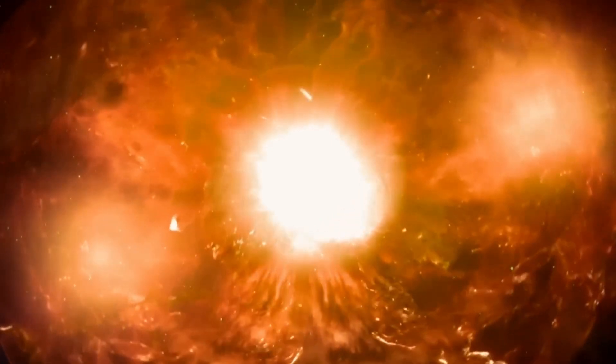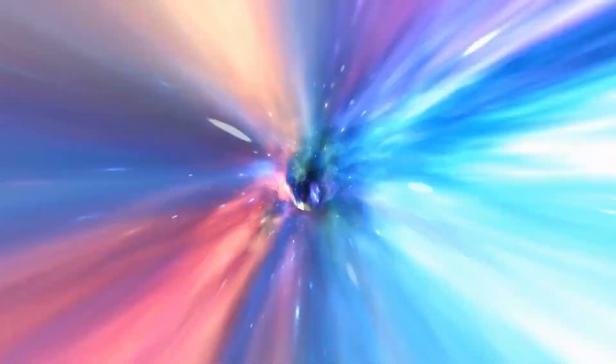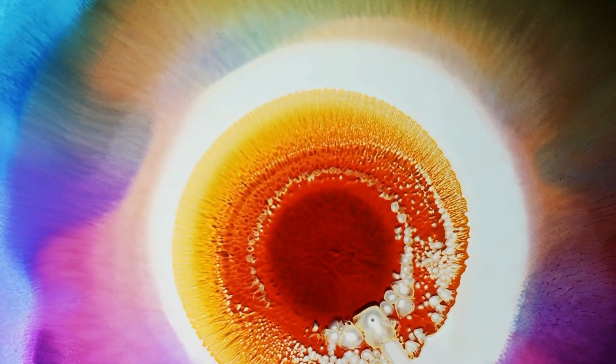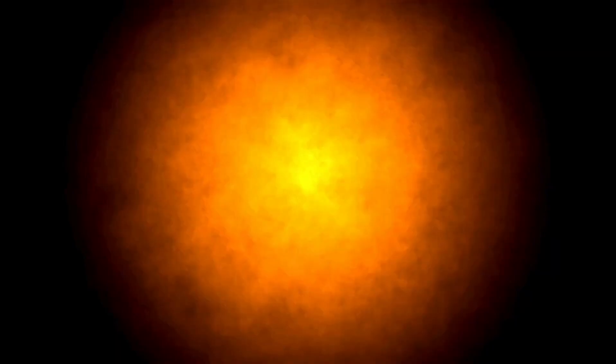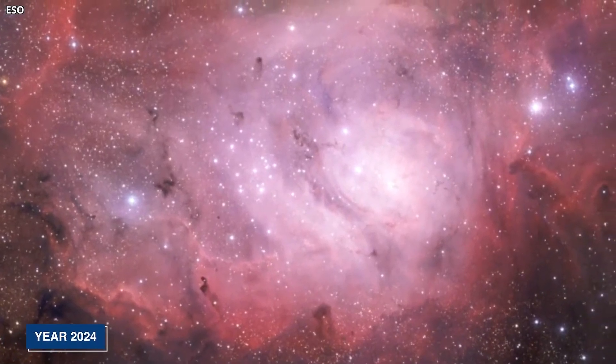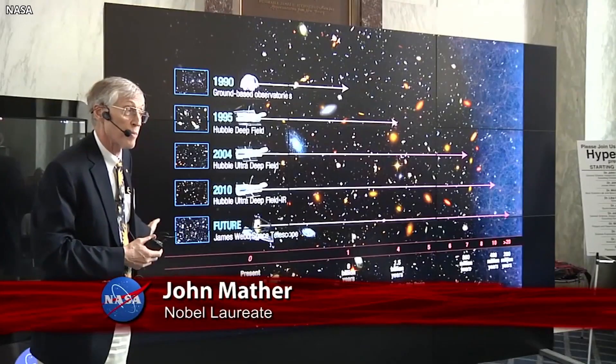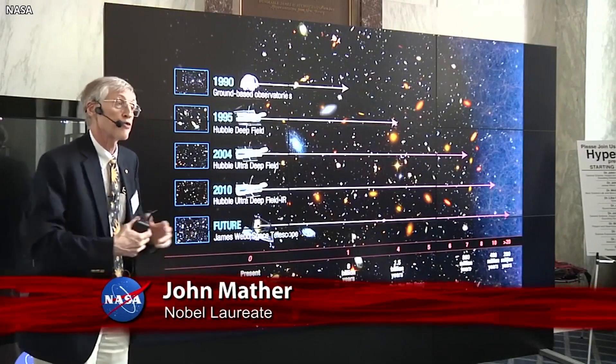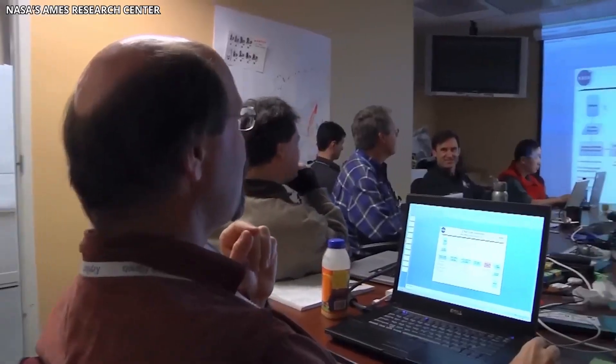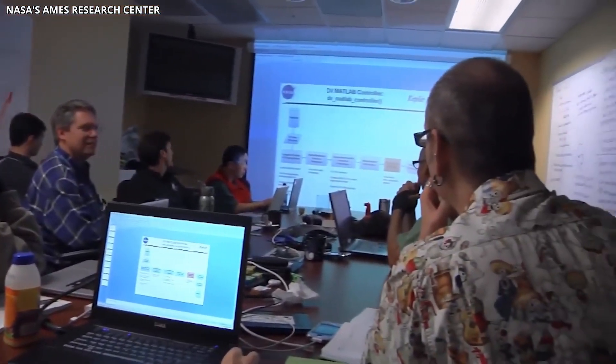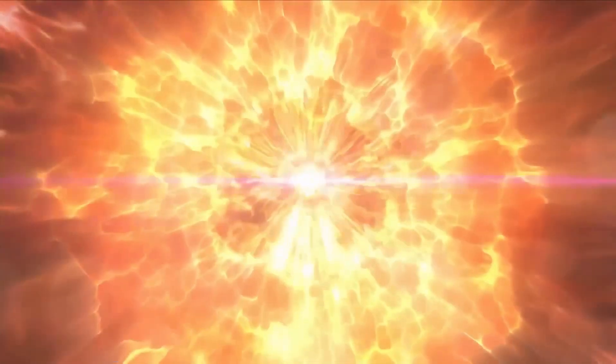NASA chief announces Betelgeuse supernova is exploding in 2024. It is over, nothing can be done to stop the impending doom. NASA chief cries out warning the world about the oncoming Betelgeuse supernova that could change the trajectory of the planet and life as we know it. Betelgeuse's end is imminent. Like a terminally ill patient, it is drawing closer to its grave. It's only a matter of time before the famous star explodes and ceases to exist.